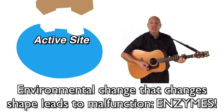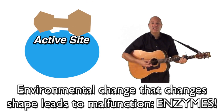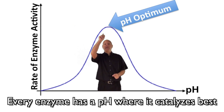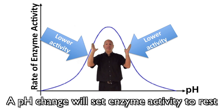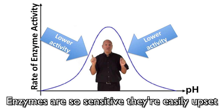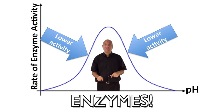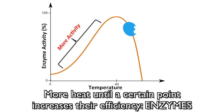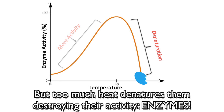Environmental changes alter shape and lead to malfunction. Every enzyme has a pH where it catalyzes best; a pH change will send enzyme activity to rest. Enzymes are also sensitive — they're easily upset. While heat until a certain point increases their efficiency, too much heat denatures them, destroying their activity.